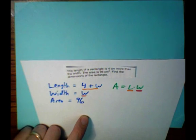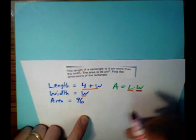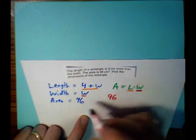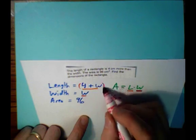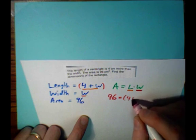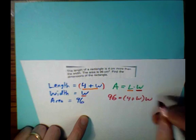Let's write the equation. Here's the area, 96. 96, which is the area, equals, now my length is this quantity, 4 plus W. And my width is just the letter W.